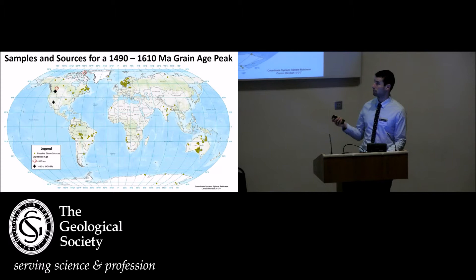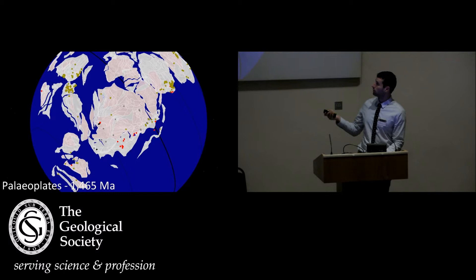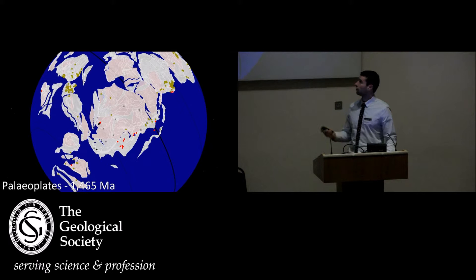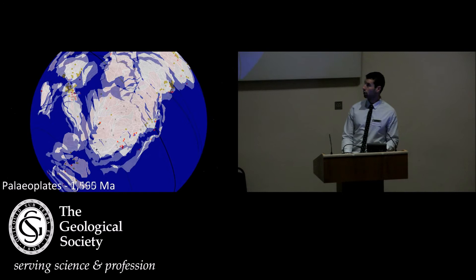If I plot this in GPlates, I can see I've got my samples right here. I don't have many sources on Laurentia at all. I have some sources over here and some sources here, but our model suggests that that's not connected to Laurentia. So instead, if I go back in time to when these grain ages were forming and look at the paleo reconstruction at that time, I can get a better understanding of what's going on.